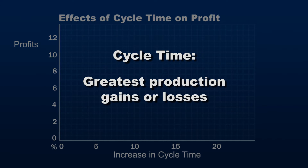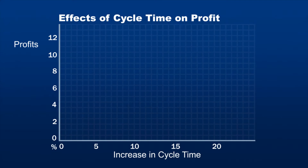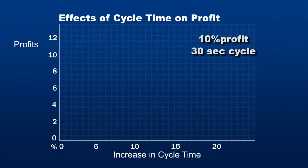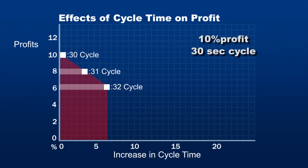Cycle time is where the greatest production gains or losses are incurred. Here is an example of the costs of cycle time. On this job, we are quoting to make a 10% profit on a job with an estimated 30-second cycle time. If this job is run at a 31-second cycle, it will require just over 3% more machine hours to complete. At a cycle time of 32 seconds, 7% more machine hours are required.